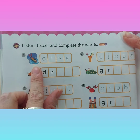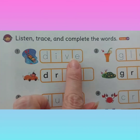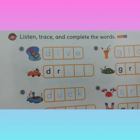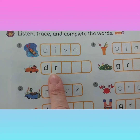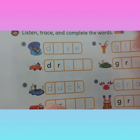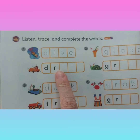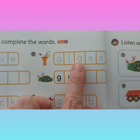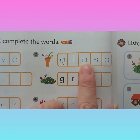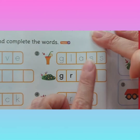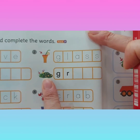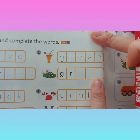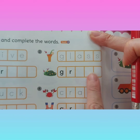In our first picture we have a diver — dive. Please trace the word dive. And then we have a picture of drive. So please write drive. Picture number two: glass. Please trace the word glass. Then we go down and we have a picture of grass. Please take your pencil and write the rest of the word.